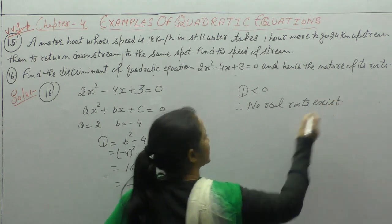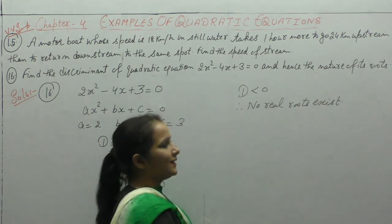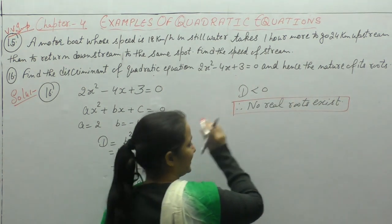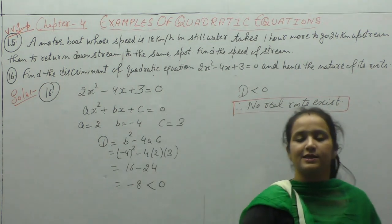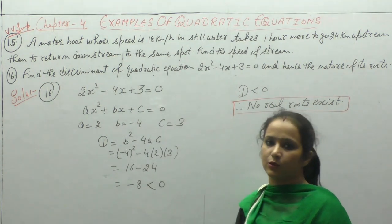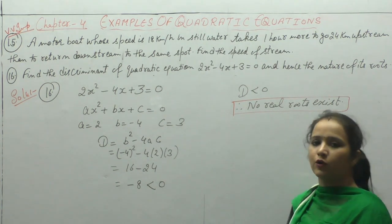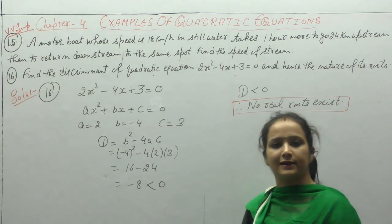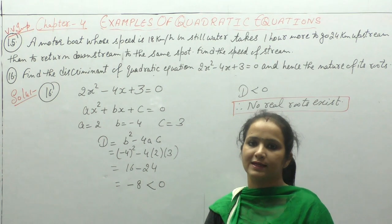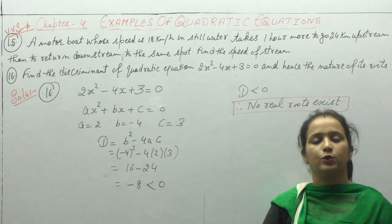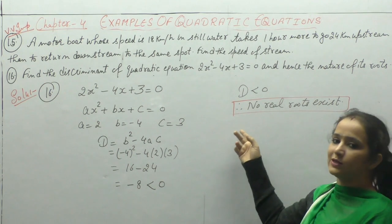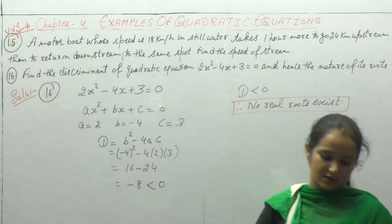अगर हमें nature of roots find करनी है, it means हमें D की value find करनी है — कि वो greater than 0 है, equal to 0 है, या less than 0 है. If D is greater than 0, then two real and distinct roots exist. If D equals 0, two real and equal roots exist. If D is less than 0, then no real roots exist.